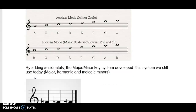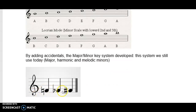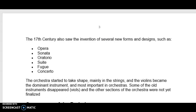An accidental is a natural, flat, or sharp sign. That's the major and minor key system that we know today, and that we're also going to study in theory — this is a very important Baroque development. The 17th century also saw the invention of several new forms and designs such as opera, sonata, oratorio, suite, fugue, and concerto.